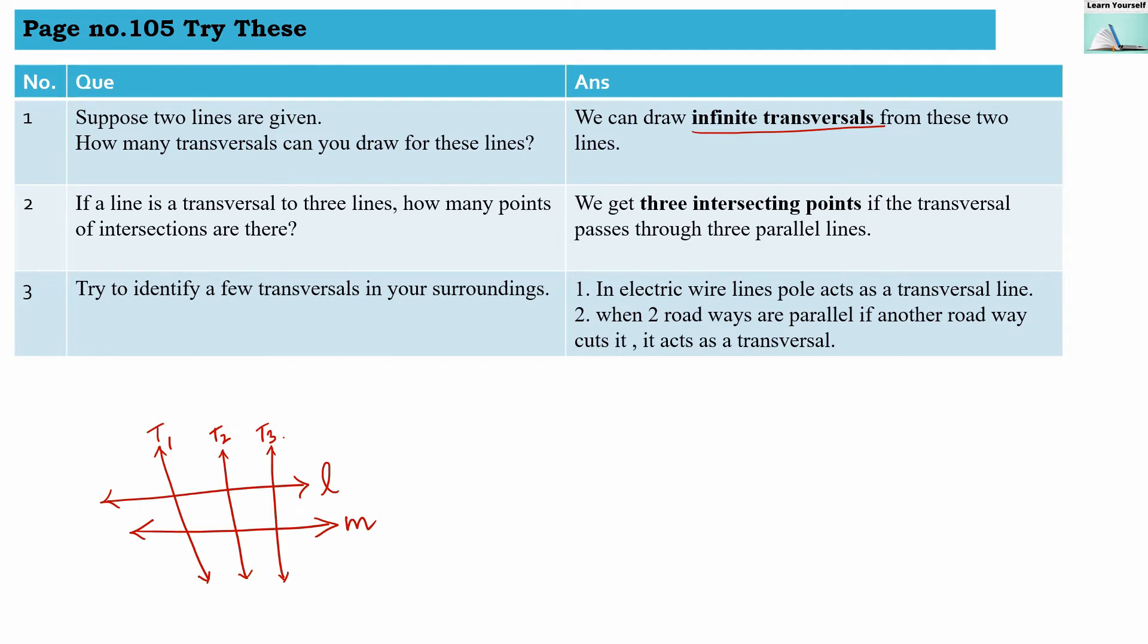Second question: if a line is a transversal to three lines, how many points of intersection are there? If there are three lines, then three points of intersection will be there. So these are my three lines and T is the transversal.